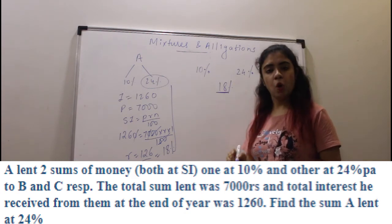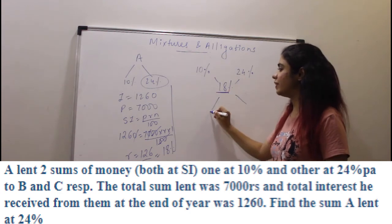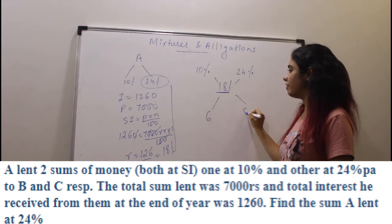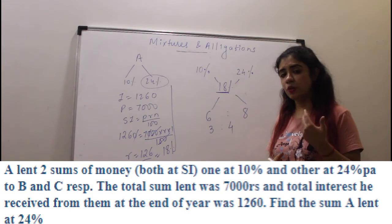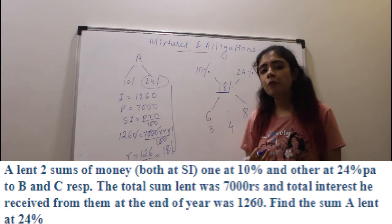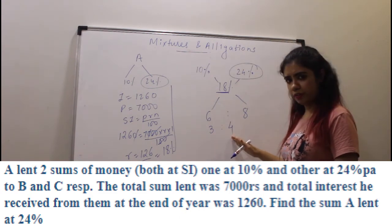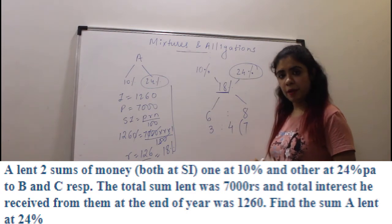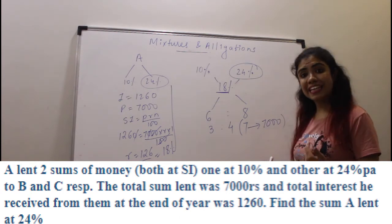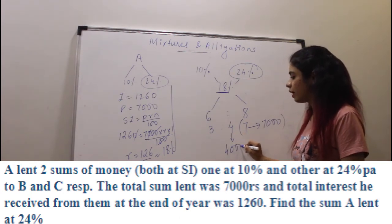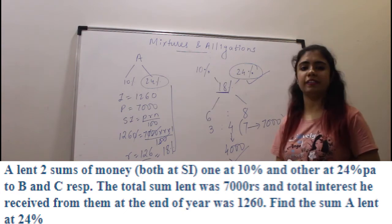Taking a cross with cheaper 10% and dearer 24%: 24 minus 18 = 6, and 18 minus 10 = 8, giving ratio 6 to 8 = 3 to 4. They are asking how much was lent at 24%. The ratio total is 7, but actual money is 7000, so 7 means 7000 rupees. Therefore 4 means 4000 rupees. He lent 4000 rupees at 24% per annum.